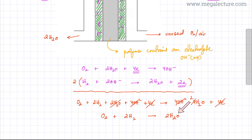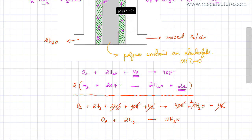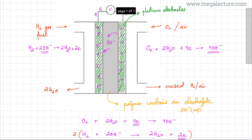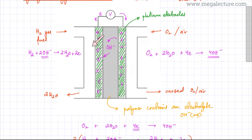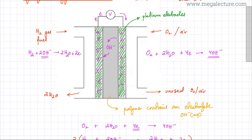This is the overall reaction happening in the hydrogen-oxygen fuel cell. Only water is produced — on the left side hydrogen reacts with OH⁻ ions in the electrolyte to produce two water molecules, which are the only byproduct of this reaction.